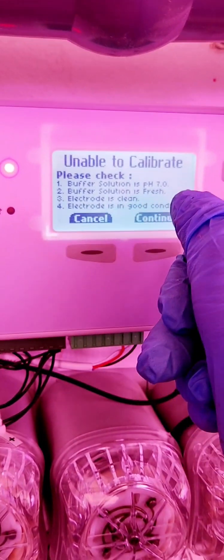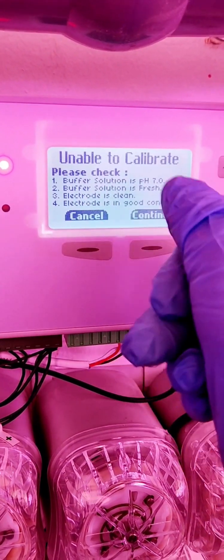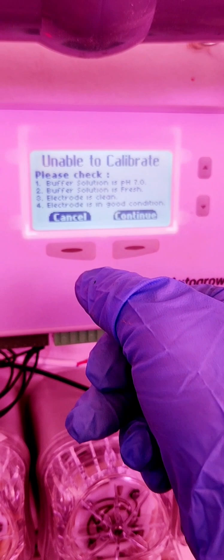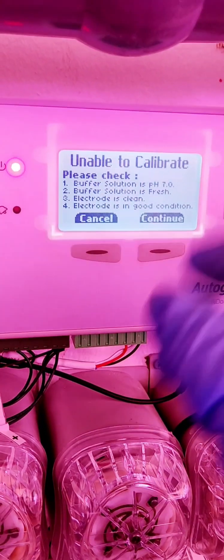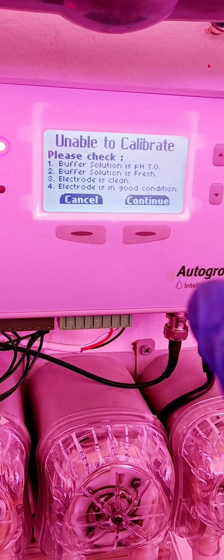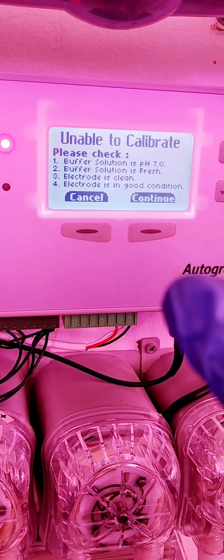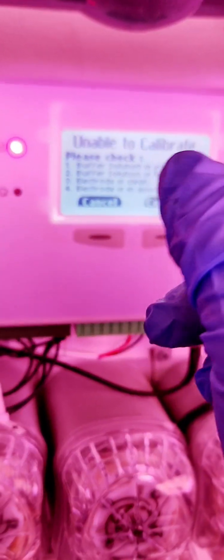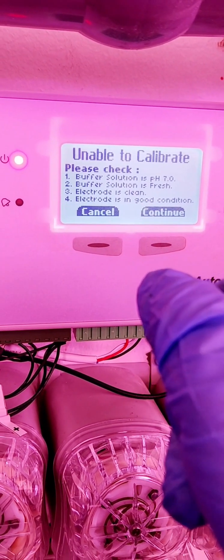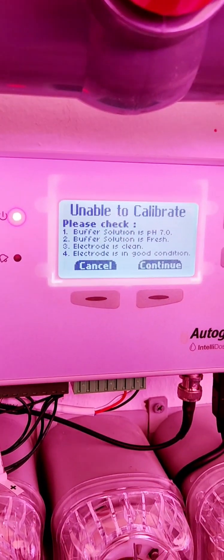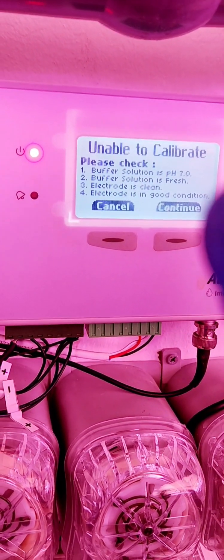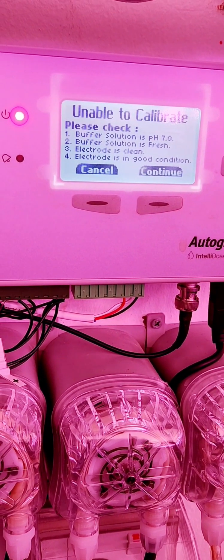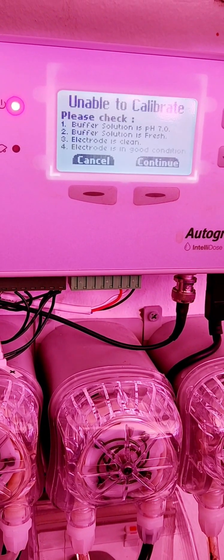Buffer solution is pH 7 is correct. Buffer solution is fresh. Yes. That one is newly bought. Number three. Electrode is clean. Yes. I clean it. I checked also. Possible dirts or any debris. And then I clear it. I clear it off. And then number four. Electrode is in good condition. Yes. Definitely yes. I suspected that previously this has been an issue. I will try to inform the supplier to check on this.